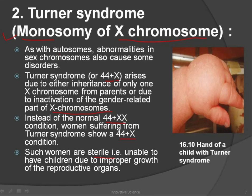The chromosome number in Turner syndrome is 45 — 44 autosomes and one sex chromosome, written as 44 plus X. The individual with Turner syndrome is sterile.